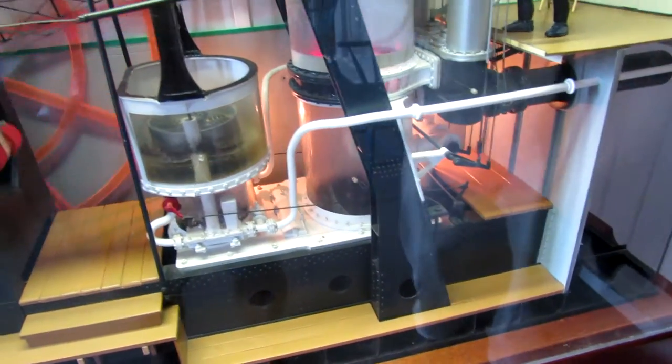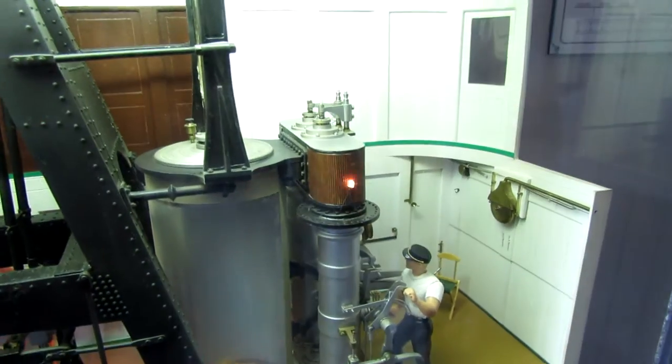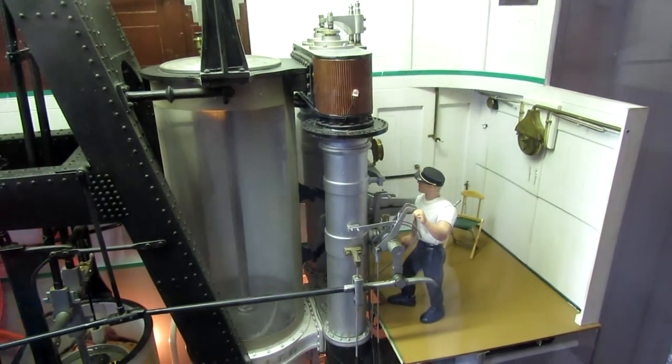The steam then enters the upper and lower steam chest, sending it through valves into either the top of the engine cylinder above the piston, or into the bottom below the piston.